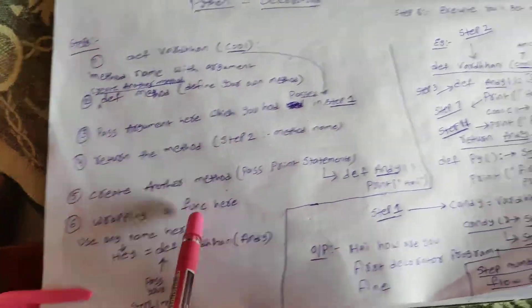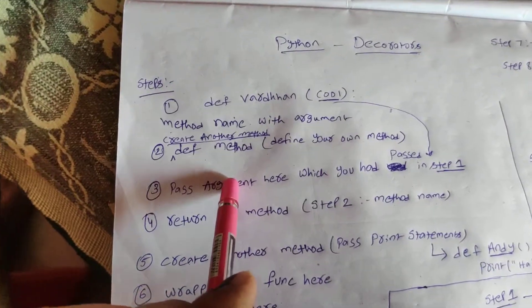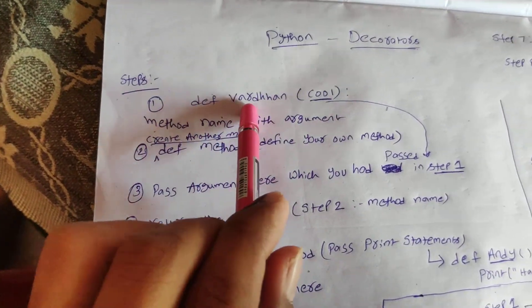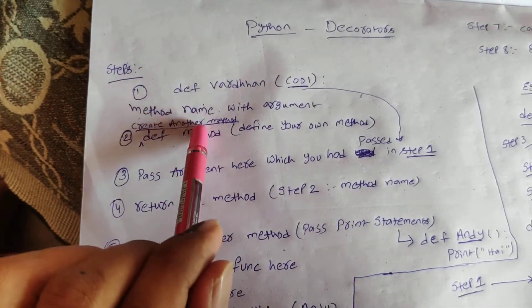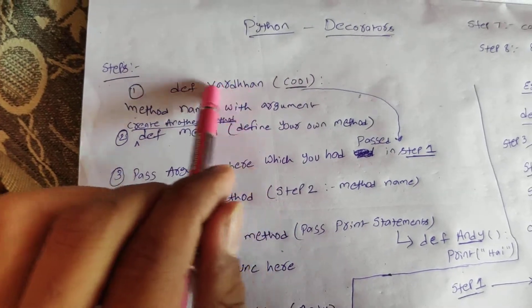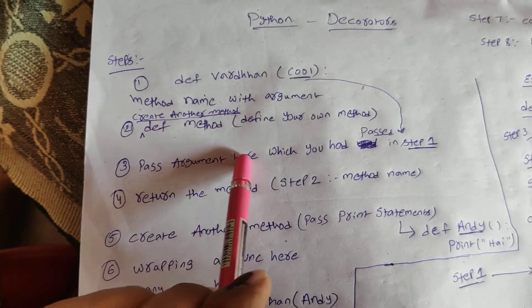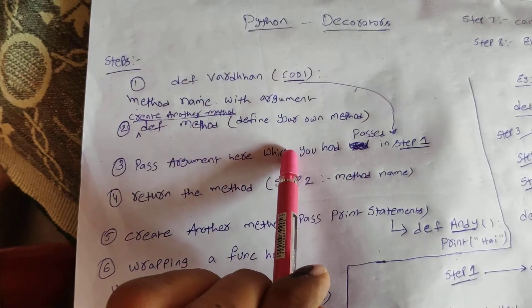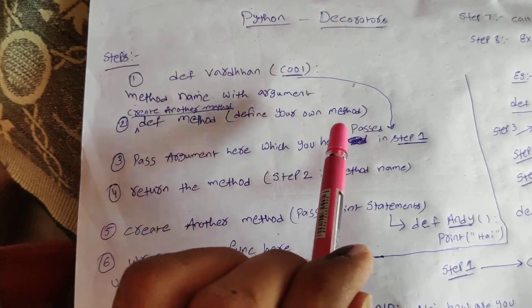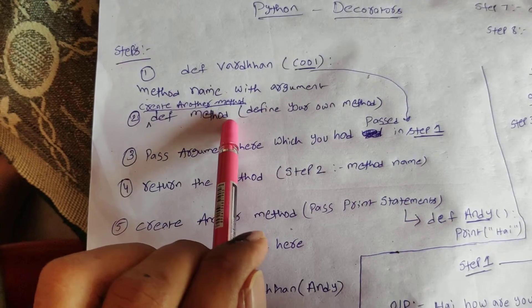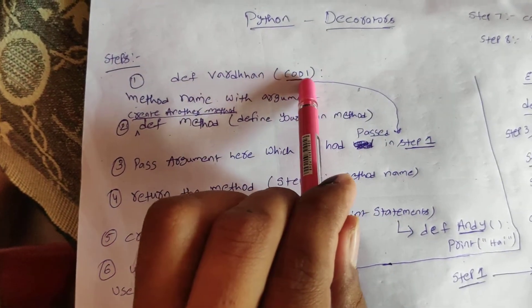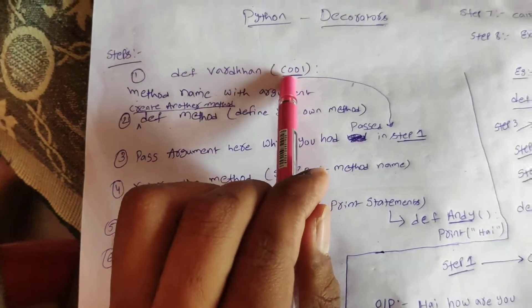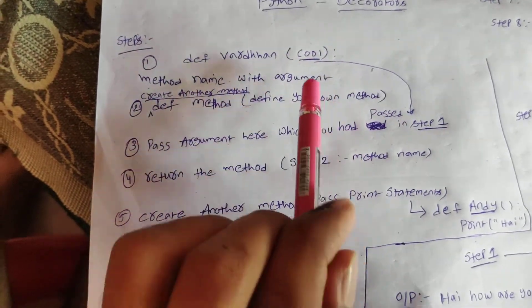You can see I had written the steps here and I had written the program here. First, you can create any method name with an argument, and after that you are going to create one more method inside this def function. After that you are going to pass some statements — any print statement. Inside this def method function, make sure you are going to call your argument name, which you had given here, called cool.